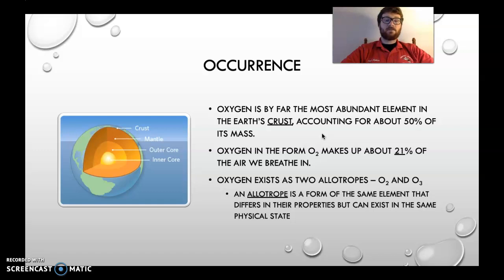But anyway, oxygen exists as two allotropes. And don't get confused over the word allotrope. It simply means a form where it's all by itself. And so naturally occurring, it exists as O2 and O3. Oxygen, classically known, and ozone. Well, what's the difference? We'll talk about that in a slide or two.